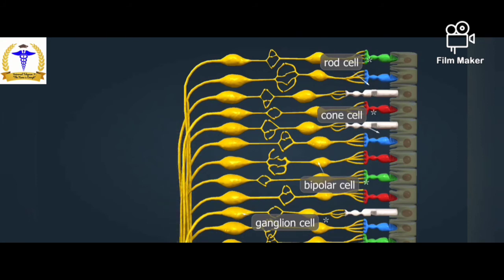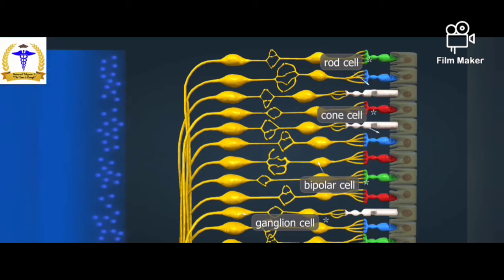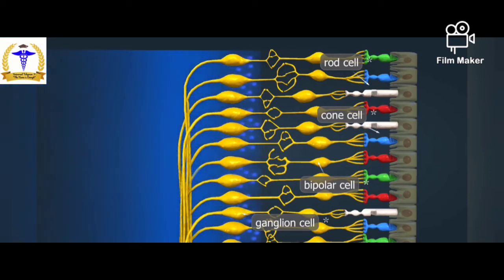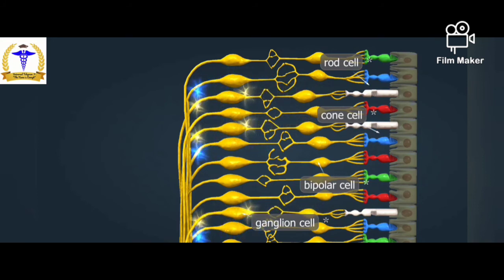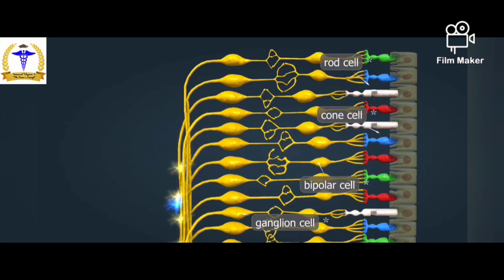The three types of cone cells are sensitive to red, green, or blue light. Their photosensitive pigment is iodopsin, which is similar to rhodopsin but contains a different protein. The stimulation threshold of cone cells is higher than that of rod cells, so they are not active in low light. This is why we lose color vision at dusk. We can see dim stars better using our peripheral vision because their images are not formed on the macula but on areas richer in rod cells.